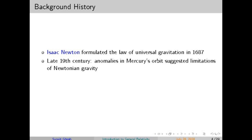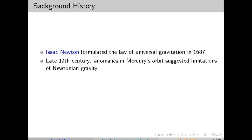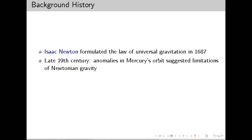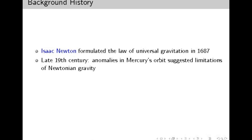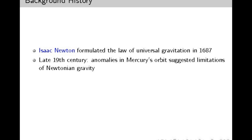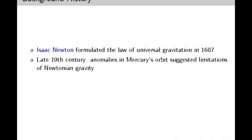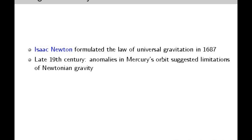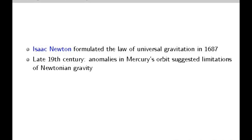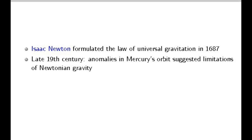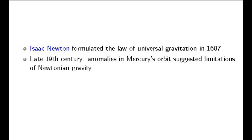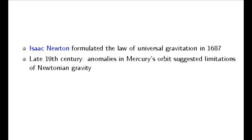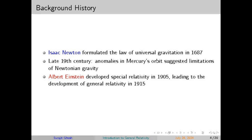General relativity has been tested and confirmed by numerous experiments over the years. One of the first major confirmations came from Arthur Eddington's 1919 expedition, which observed the bending of starlight during a solar eclipse — a pivotal moment for Einstein and for the acceptance of his theory. In 1959, the Pound-Repka experiment at Harvard University confirmed gravitational redshift, showing that light loses energy and changes color as it climbs out of a gravitational field.